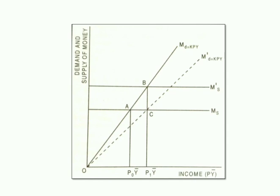The cash balance approach implies that the price level P is directly proportional to the money supply Md and indirectly proportional to the aggregate real income Y and the proportion of real income which individuals choose to keep in the form of money, K.